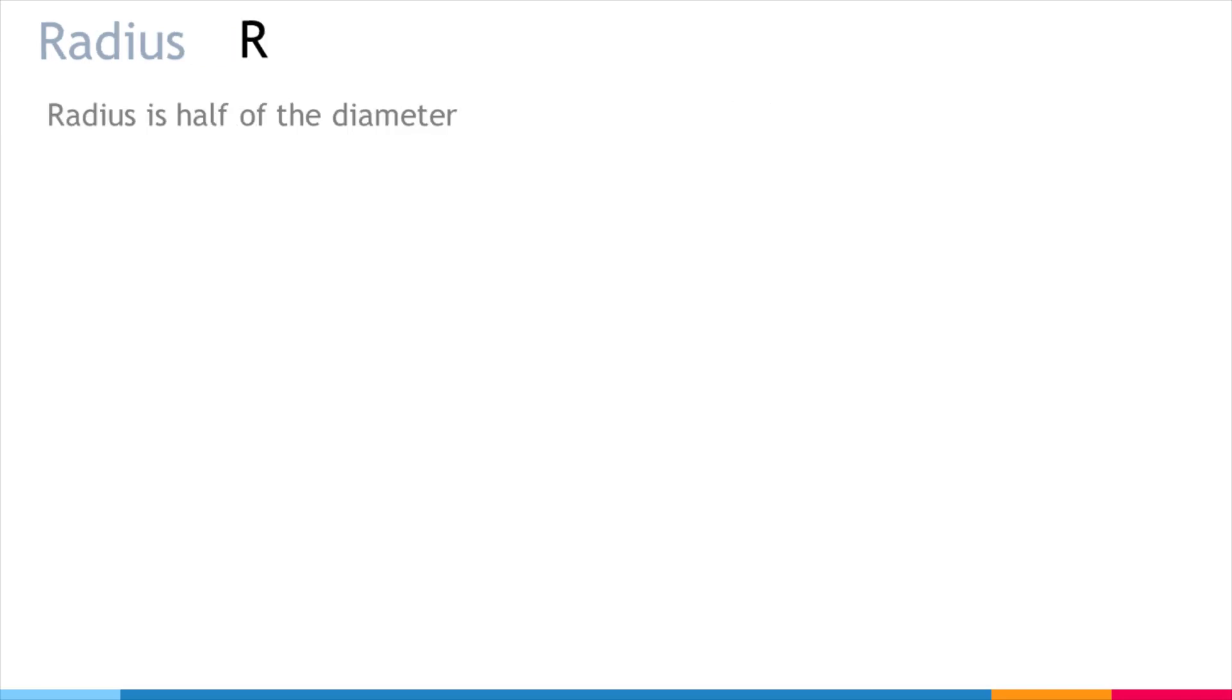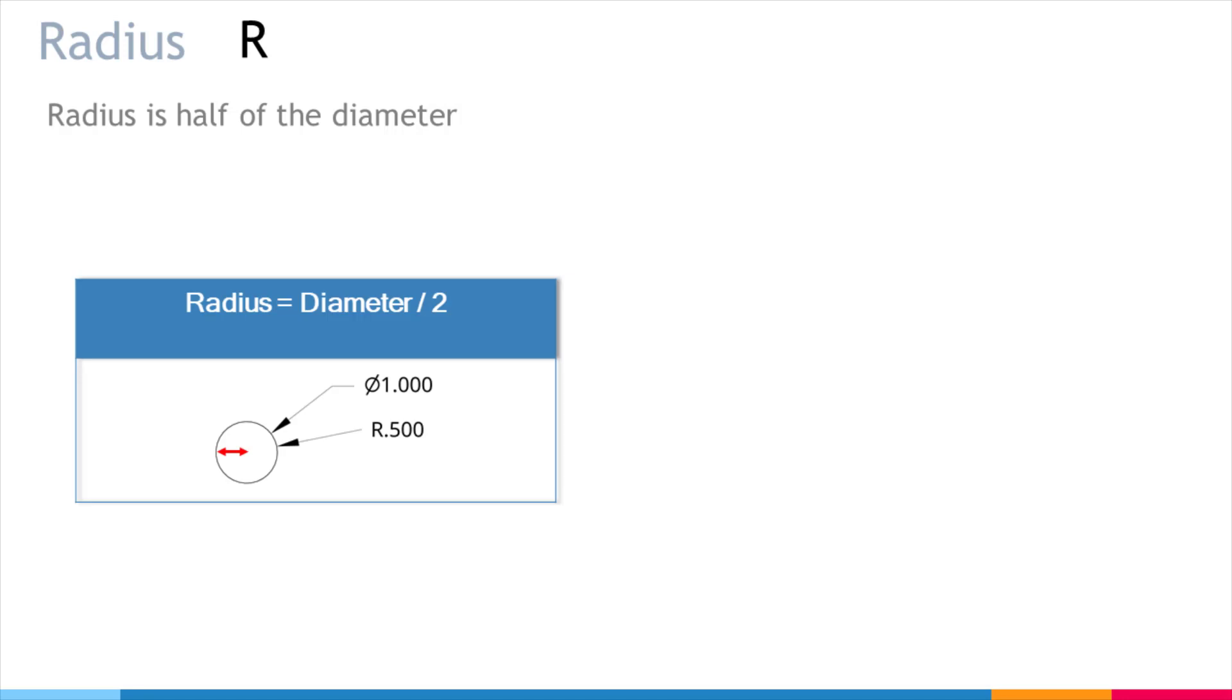Radius is another type of dimension associated with circles. We've talked about diameter, well, radius is defined as half of the diameter. So that would be the diameter over two, or the diameter divided by two. So a circle with a diameter of one inch will have a radius of half an inch, or 0.5 inches.